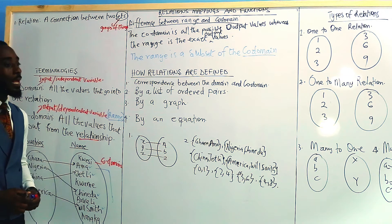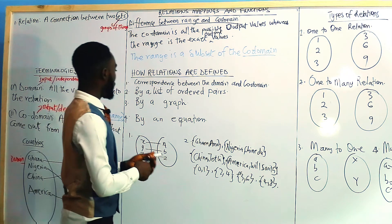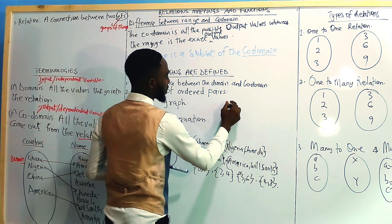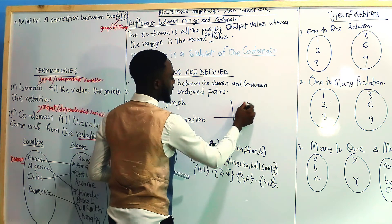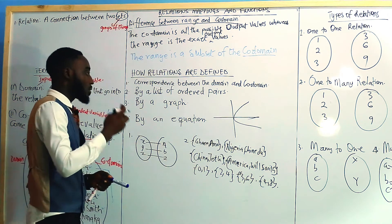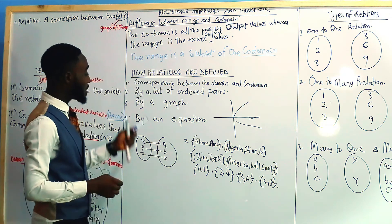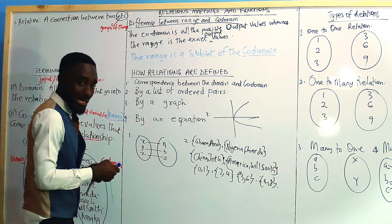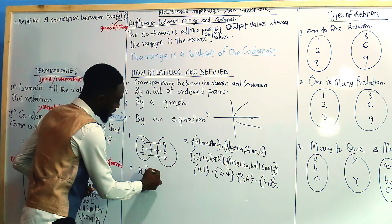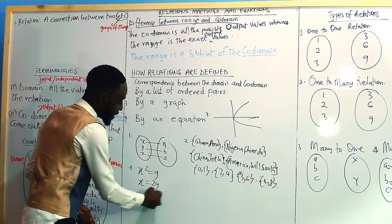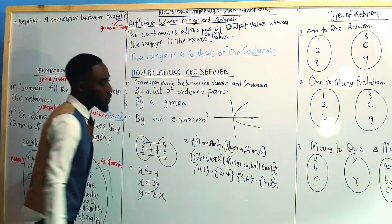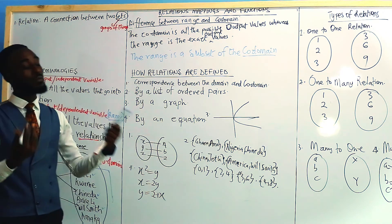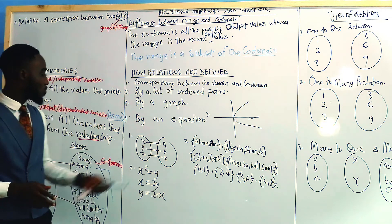Or a relation can be written in graph form, where we plot the values on axes. So a graph is another way to represent a relation. Or we could also have it written as an equation — for example, x = y², x² = y, x = 2y, or y = 2 + x. So a relation can be given as an equation, as a correspondence diagram, as a graph, or as ordered pairs.